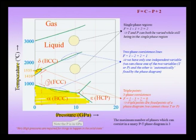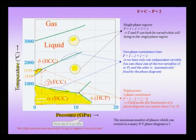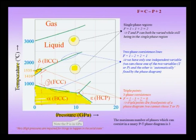Let us notice a few things: if you look at a single phase field — for instance, pure liquid — or the single phase field of FCC iron, or the single phase field of BCC iron (colored yellow), or the HCP form known as epsilon, and calculate degrees of freedom: F equals 1 component, plus 2 for temperature and pressure, minus 1 phase, giving 2. That means temperature and pressure can both be varied while still remaining in the single phase region.